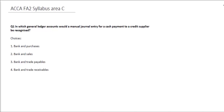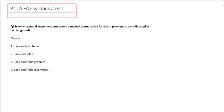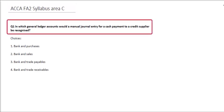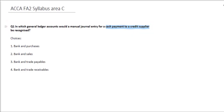The following question relates to ACCA's FA2 Syllabus Area C. This question asks us in which general ledger accounts would a manual journal entry for cash payment to a credit supplier be recognised? The choices are Bank and Purchases, Bank and Sales, Bank and Trade Payables, and Bank and Trade Receivables.